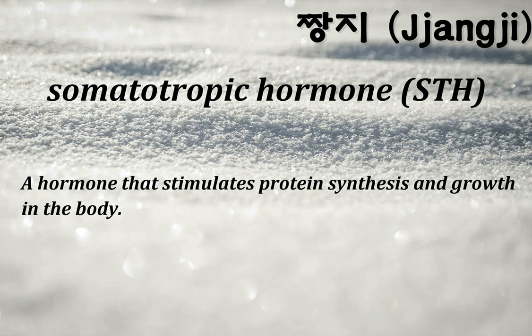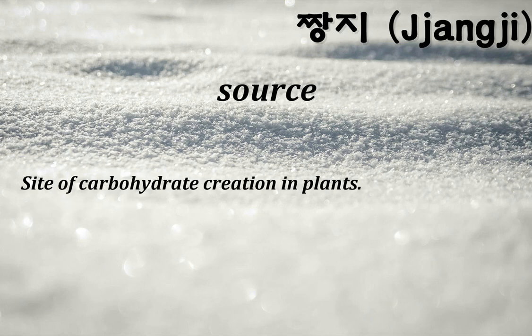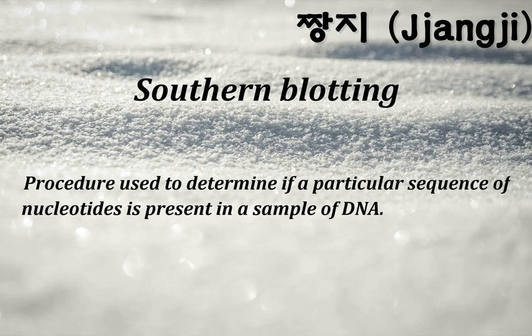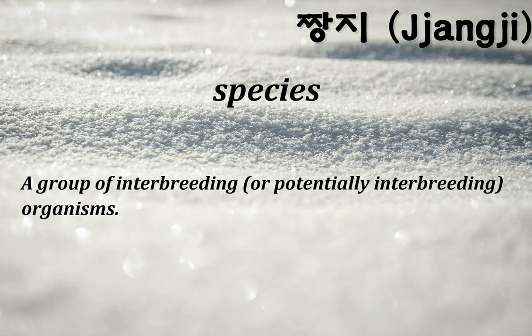Somatotropic hormone (STH): a hormone that stimulates protein synthesis and growth in the body. Somite: structure that gives rise to the muscles and vertebrae in mammals. Source: site of carbohydrate creation in plants. Southern blotting: procedure used to determine if a particular sequence of nucleotides is present in a sample of DNA. Speciation: the process by which new species evolve.